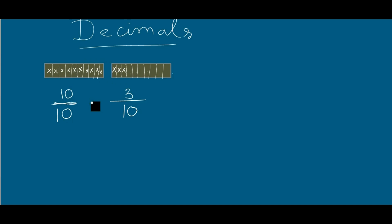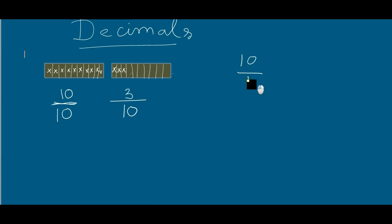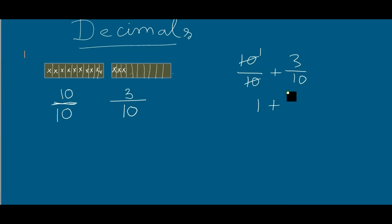Now, if I want to add these two numbers — that means if these ten equal small parts and these three small parts are added — we can write it as ten over ten plus three over ten. This ten over ten can be cancelled, so it becomes one plus three over ten.